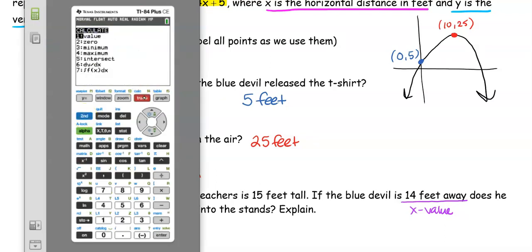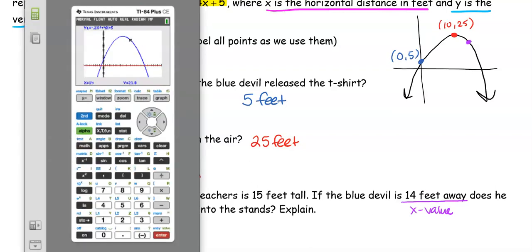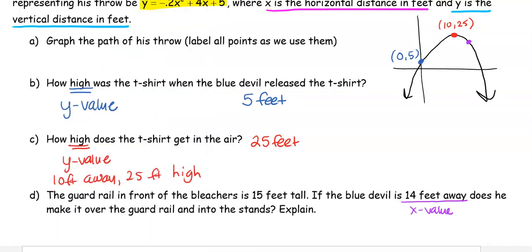I'm going back to my calculator, 2nd Trace, and I'm going to use Value again, number 1. I want to find out what is the value when it's 14 feet away. I'm going to label this point on my graph: (14, 21.8).